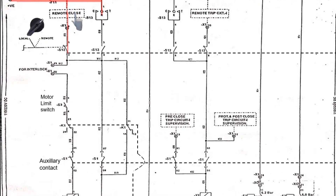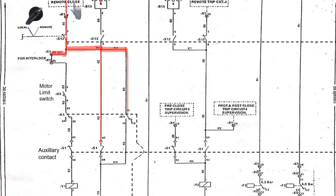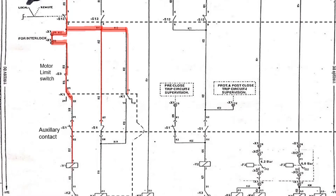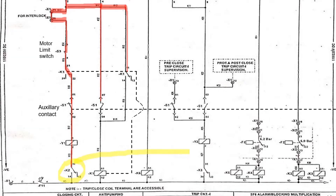Then the current will flow in this direction. Current will not flow for the right-hand side paths but will flow from the left side if the interlock is in OK condition. The current will stop if the spring is not charged, and if the spring is charged, the motor limit switch will be in closed position and the current will flow downwards. It will flow through auxiliary contacts S1 and closing coil Y1, but will stop at K2, which is an SF6 gas supervision relay.